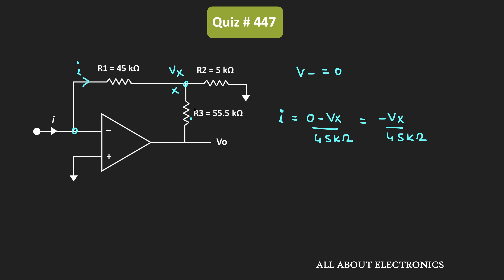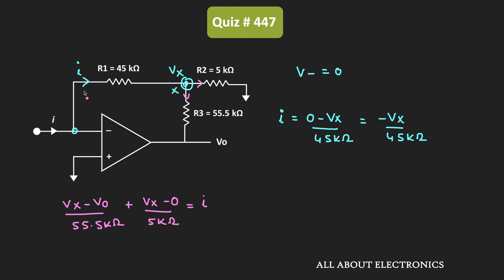Now let us apply KCL at this node. Applying KCL, we can write: (Vx − Vout) / 55.5 kΩ + Vx / 5 kΩ = I, where the two terms on the left are outgoing currents and I is the incoming current. Simplifying, this becomes: Vx − Vout + 11.1·Vx = 55.5 kΩ × I.